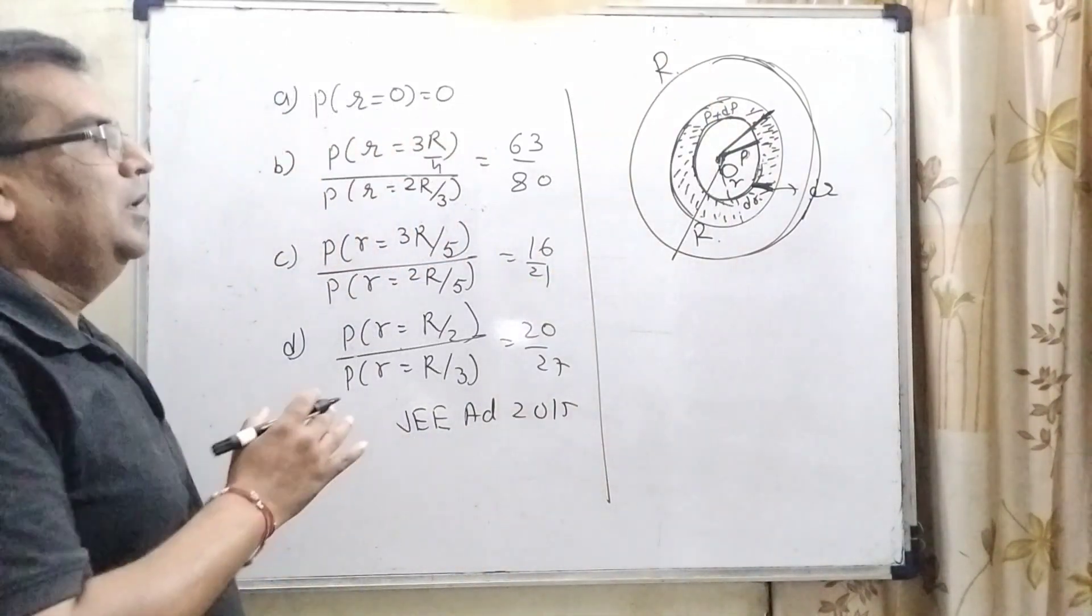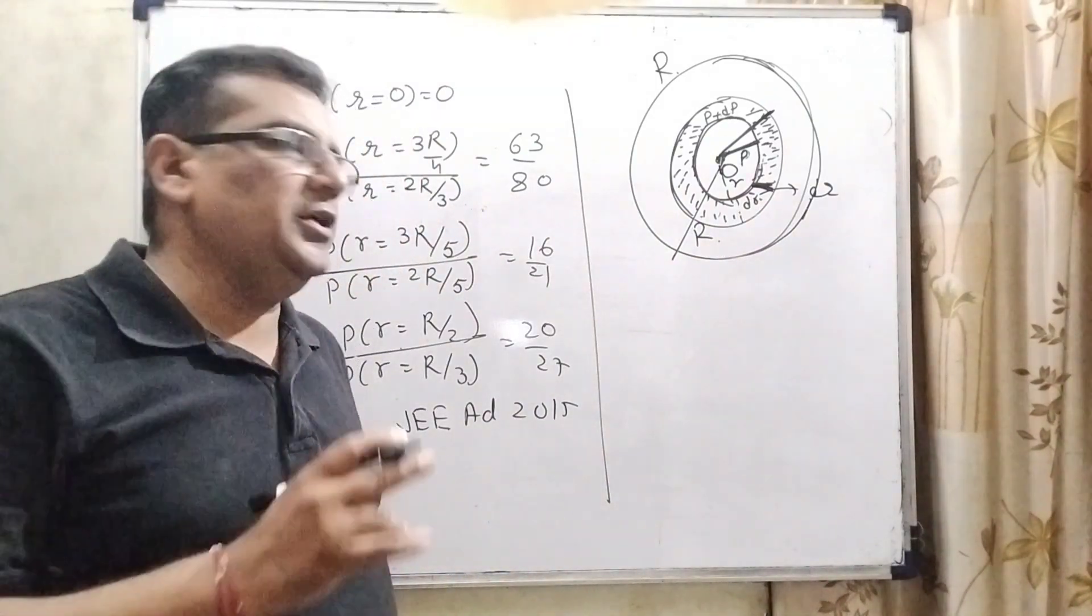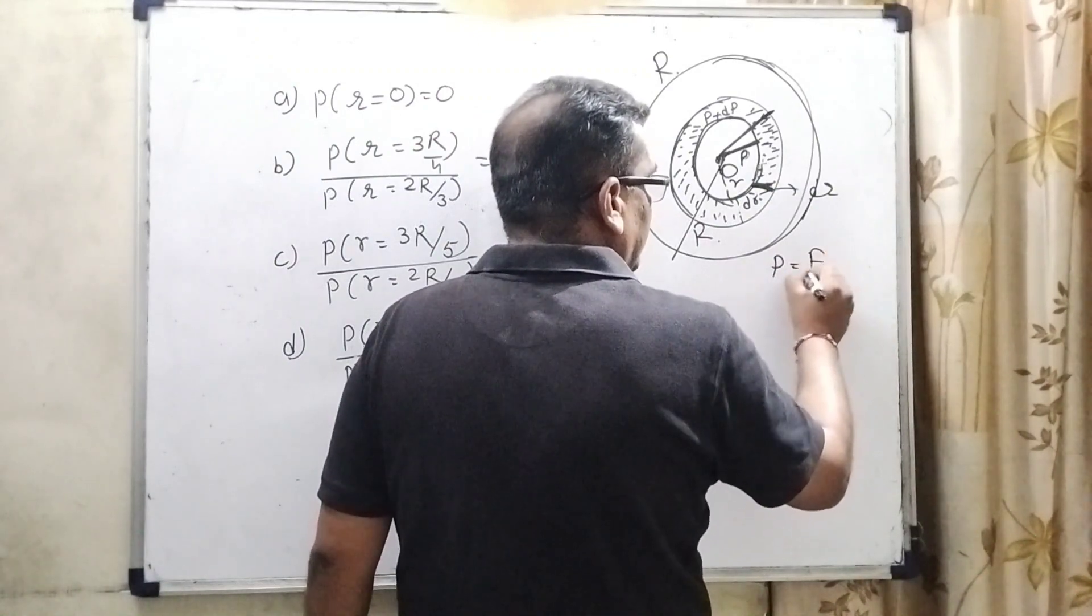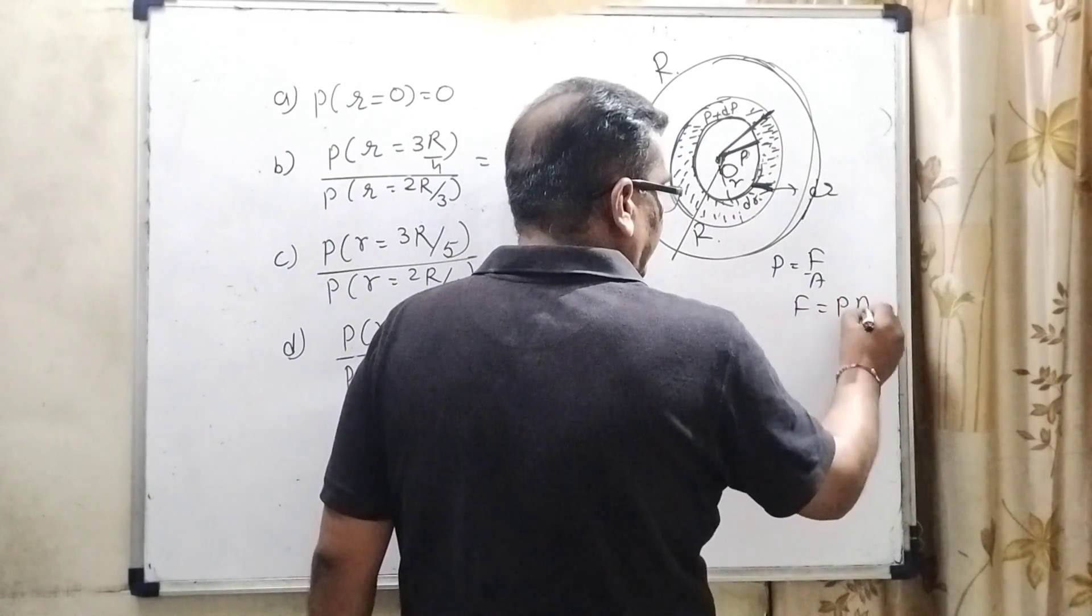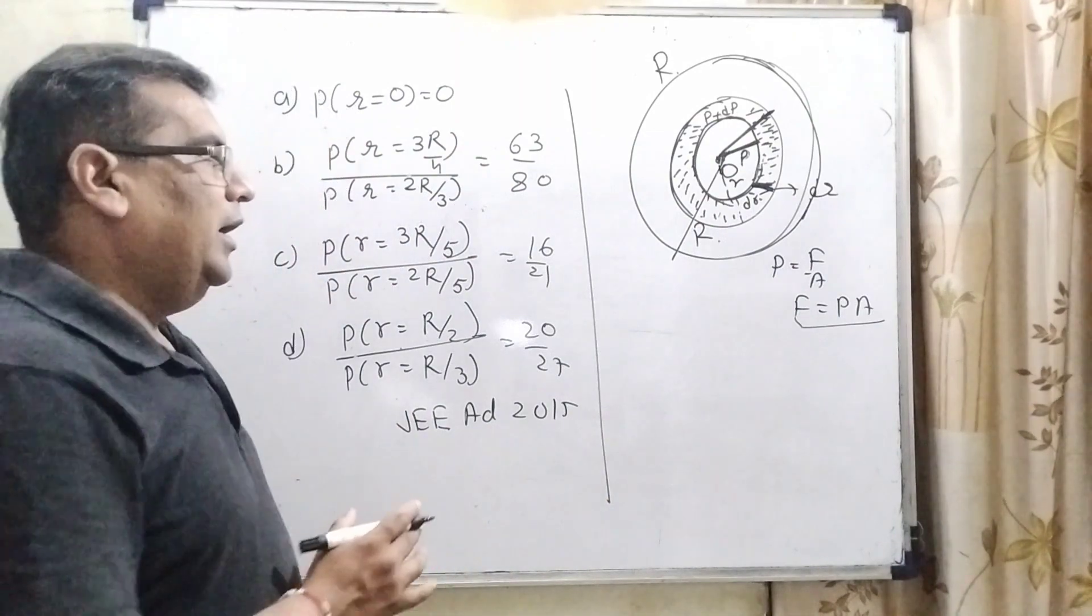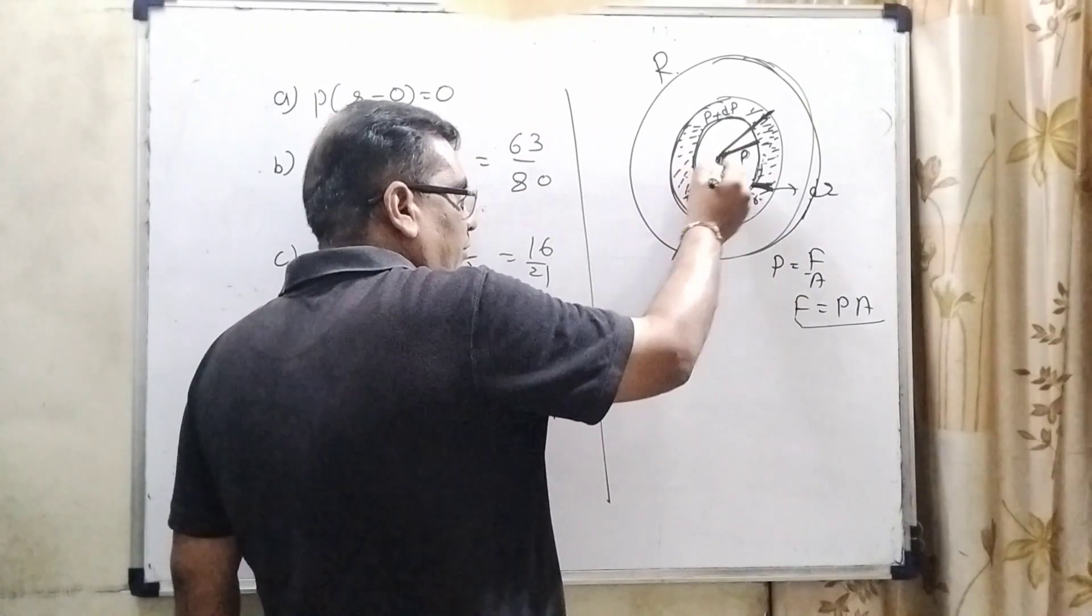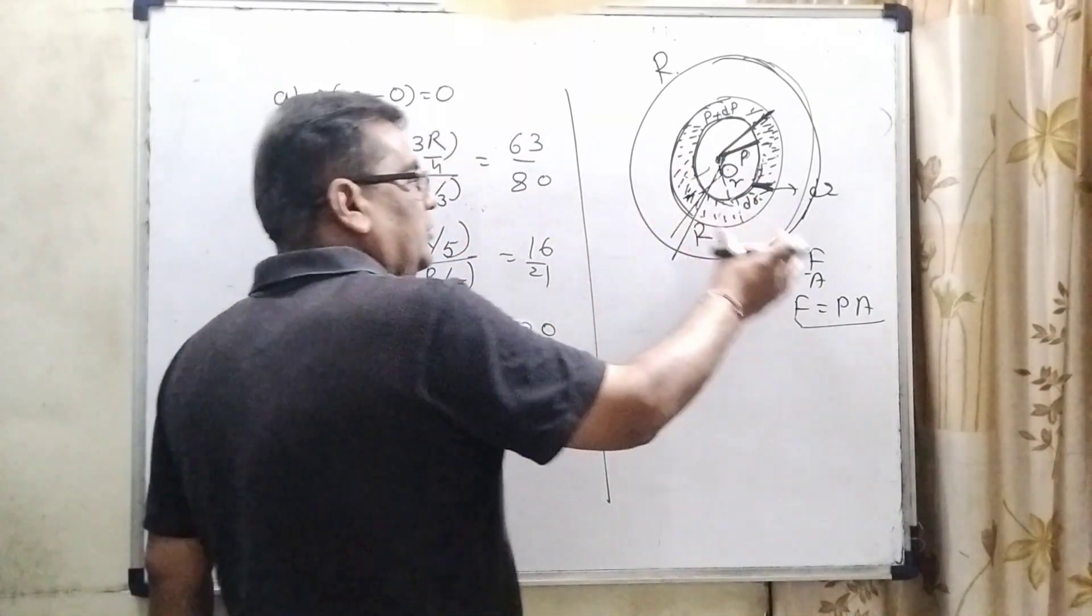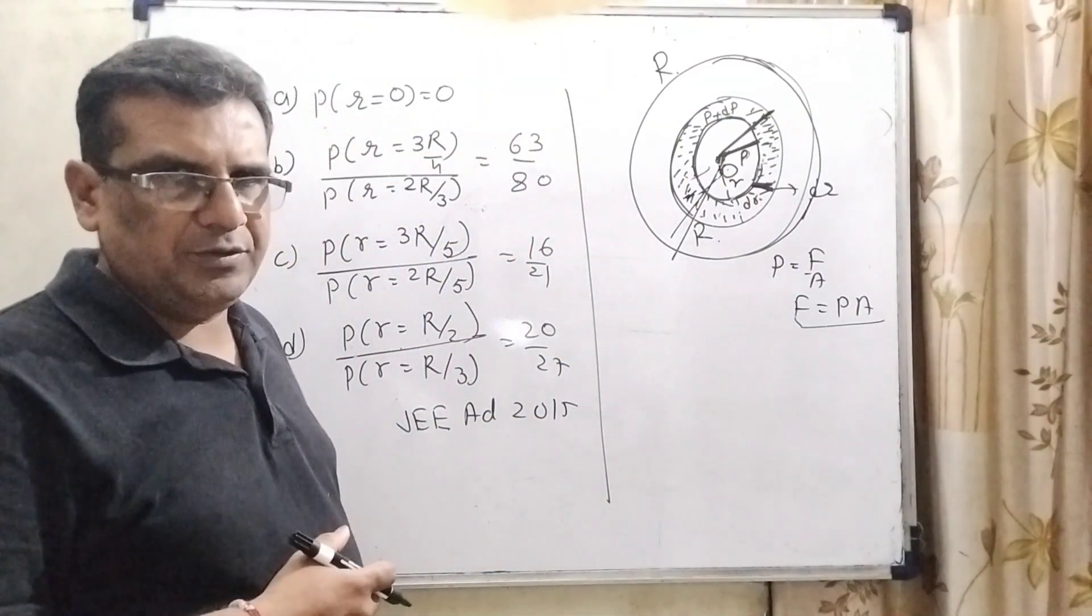So here we can correlate it with gravitational force and the pressure force. Pressure equals force upon area, so therefore force equals pressure into area. So therefore this pressure force is equal to gravitational force. And these rings, consider these rings integrated from r to capital R. Then this value is equal to this pressure force. Let us use this formula and this concept.